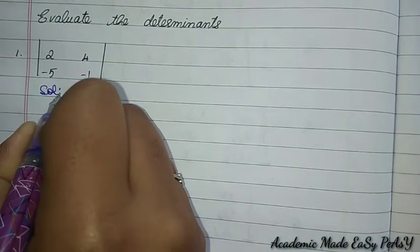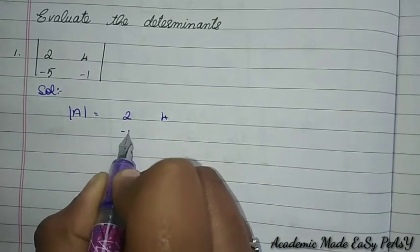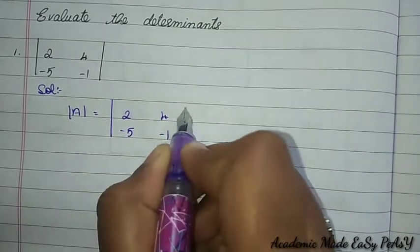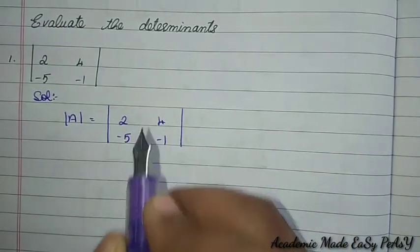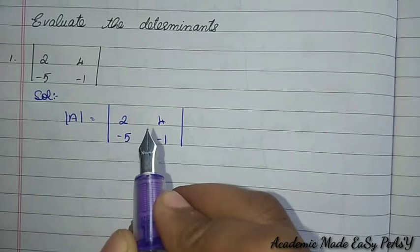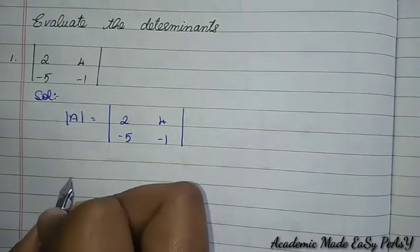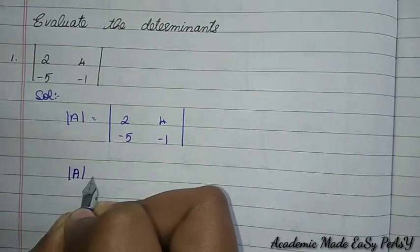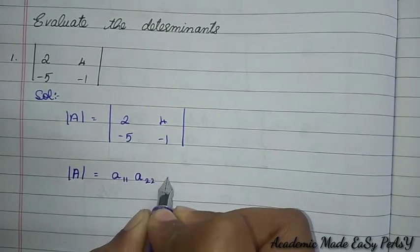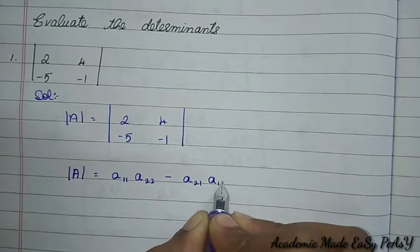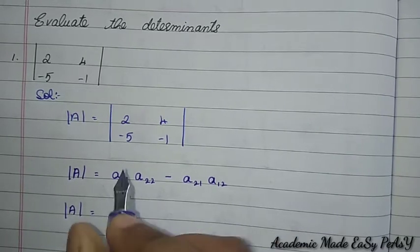Let the determinant be A, equal to the matrix [2, 4; -5, -1]. To evaluate the determinant means we will be finding its value. The formula for a 2×2 matrix is: det(A) = a₁₁ × a₂₂ − a₂₁ × a₁₂. We will now substitute the values.